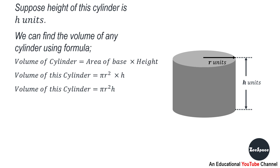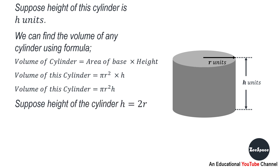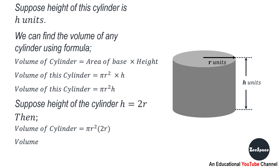We can simply write it as volume of cylinder equals pi r squared H. Now, suppose the height of the cylinder is equal to twice the radius, that is H equals 2r. Then volume of cylinder equals pi r squared times 2r, which simplifies to 2 pi r cubed.